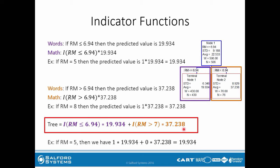As a verification example, if RM equals 5: the first term gives 1 because 5 is less than or equal to 6.94, multiplied by 19.934. Then for the second term, plug in 5 again — is 5 greater than 6.94? No, so that is false, meaning the indicator takes a value of 0. Multiplied by the predicted value, that gives 0. So the total is 19.934, which is exactly what you would get by just following the tree informally.